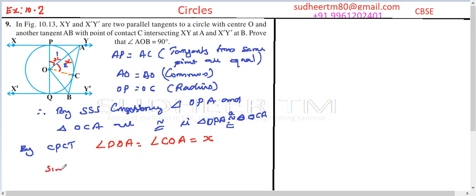Similarly, triangles 3 and 4 are also congruent. Then by CPCT, angle QOB is equal to angle COB, which is equal to Y. Both are Y, so this angle is Y and this angle is also Y.